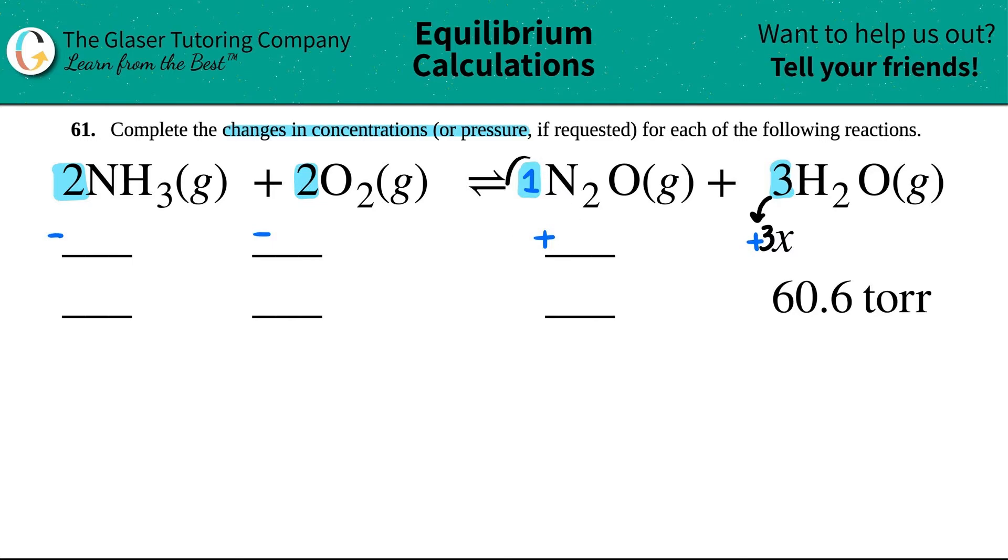Let's follow the general rule of using the coefficients. So technically, this would have been 3x. This, since there was a 1 here, this was plus 1x. But if we just say plus 1x, the 1x is just meaning that it's an x. This, the coefficient was 2 in front of the O2. So technically, this would be minus 2x. And then the same thing here, there was a 2 in front of the NH3. So this is minus 2x.